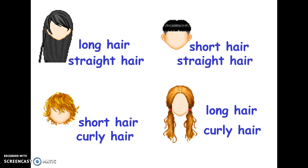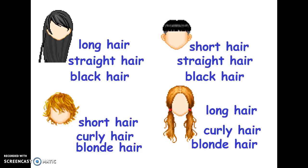We have some examples here to describe hair. For example, long hair, straight hair, and black hair. We can say long - the length; straight - the type or shape of the hair; and black - the color of the hair. Another example: short hair, straight hair, and black hair.